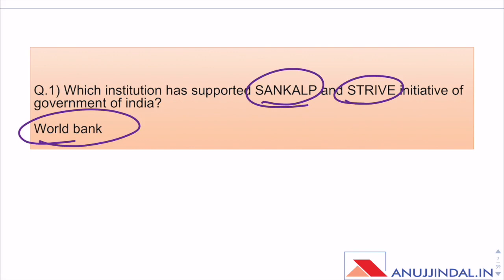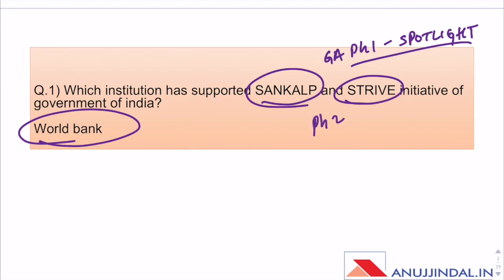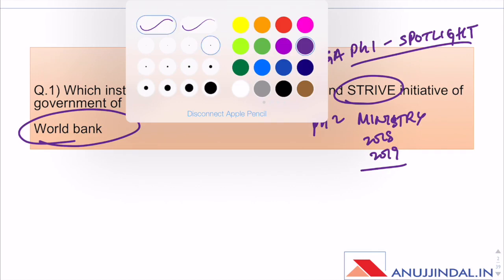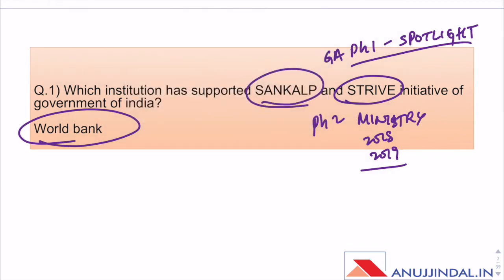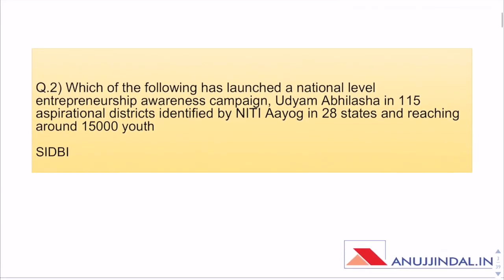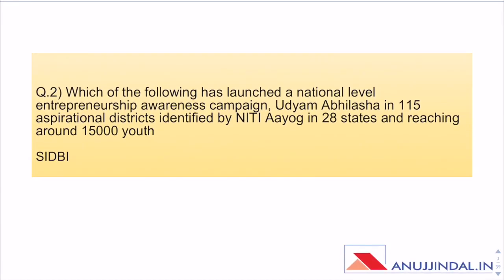The first question is: which institution has supported Sankalp and Strive Initiative of Government of India? These two initiatives were covered in detail in General Awareness for Phase 1, that is Spotlight, and also in Phase 2 Ministry-Wise schemes as well as schemes of 2018 and 2019. The correct answer is World Bank.